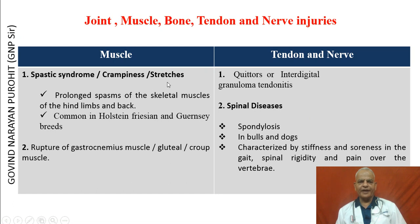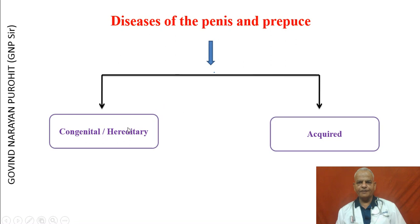Spastic syndrome, crampiness, and stretches are problems that can cause poor libido and ability to mate. Long spasms of skeletal muscles are common in Holstein, Friesian, and Guernsey breeds. Rupture of the gastrocnemius muscle or gluteal croup muscles can result in similar problems in bulls. Quitters, interdigital granuloma, or tendonitis can prevent a bull from mating. Spondylosis in bulls and dogs is characterized by stiffness and soreness in the gait, spinal rigidity, and pain over the vertebrae. Diseases of the penis and prepuce can also result in poor libido and ability to mate.